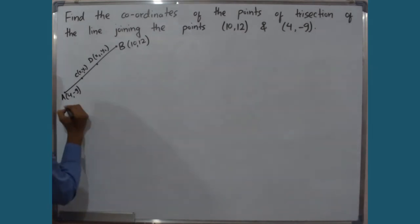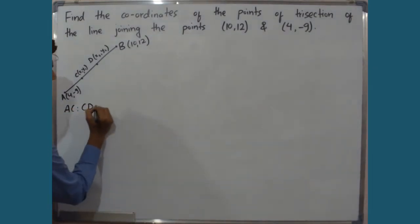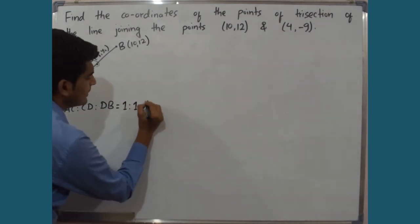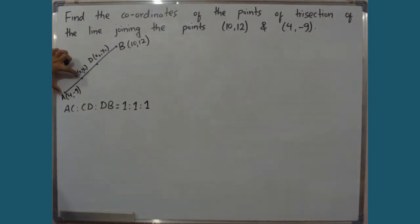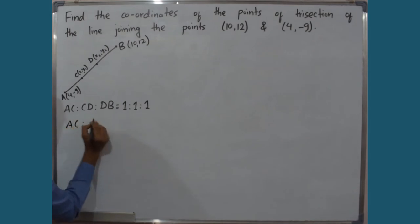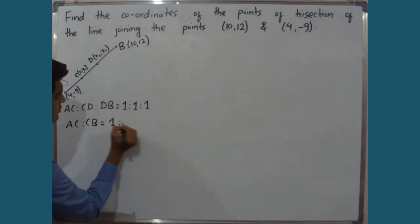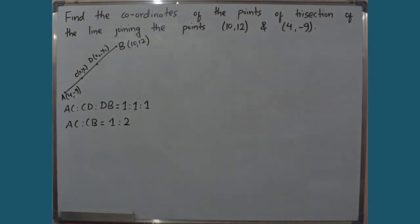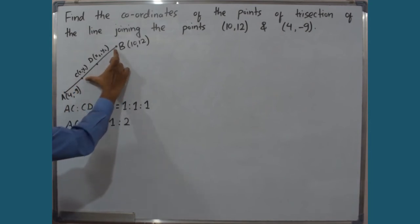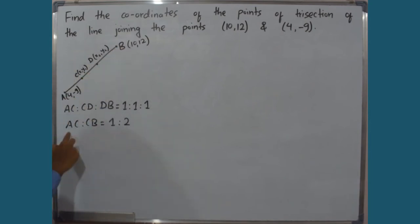The line AC to CD to DB will be in the ratio 1:1:1. That is, each is one part. The line AC to CB will be equal to 1:2, since C divides the line with 1 part on one side and 2 parts on the other side of AB.